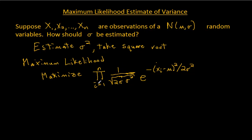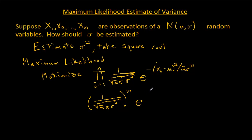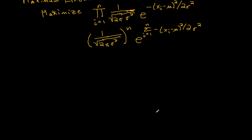I can rewrite this. The term 1 over the square root of 2π sigma squared does not depend on i, so if I multiply it by itself n times, I just raise it to the power of n. Then I have a product of e to the power of some stuff, which means I have e to the power of the sum from i equals 1 to n of negative xi minus mu squared over 2 sigma squared. I want to maximize this, and in particular I want to maximize it by choosing an appropriate sigma squared — that's what I'm trying to estimate.